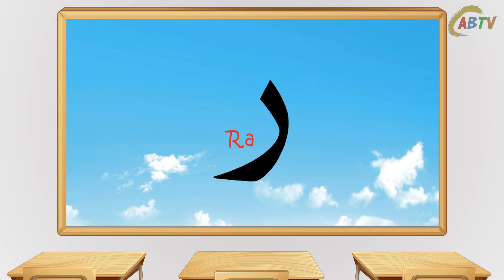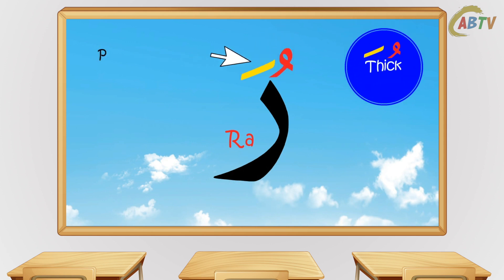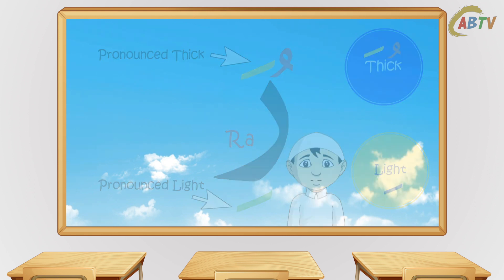This letter is called Ra. Ra is pronounced with a thick sound if there is a fatha or a dhamma on it. There are also other rules which will be explained in future lessons.